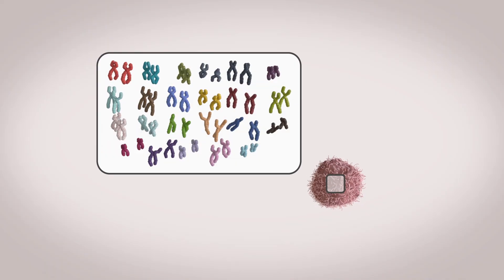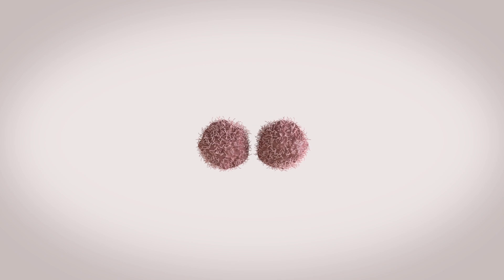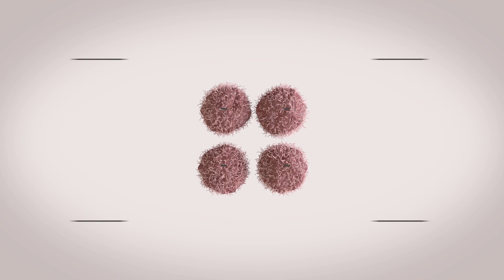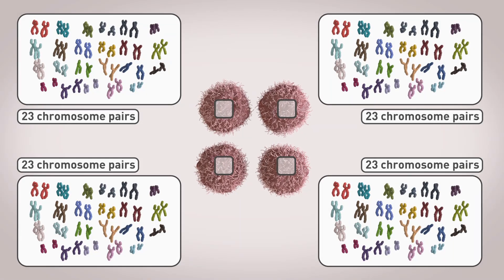Healthy human cells have 23 pairs of chromosomes that package up our DNA. When a cell grows and divides, all the chromosomes are copied and a complete set of 23 pairs is carried across into each of the new cells.